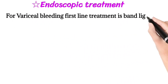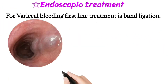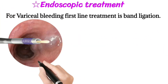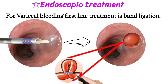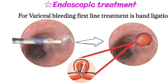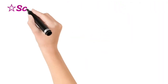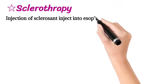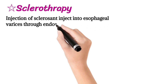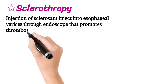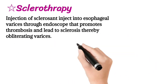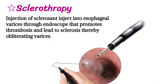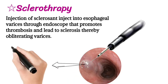For endoscopic treatment of residual bleeding, the first-line treatment is band ligation. Sclerotherapy involves injection of sclerosant into esophageal varices through endoscopy, which promotes thrombosis and leads to sclerosis.